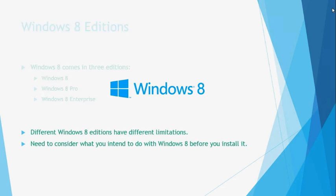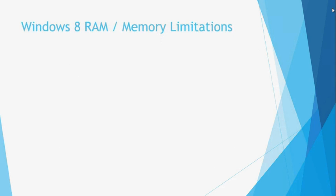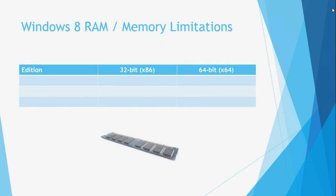The first big difference between the different editions of Windows 8 is the maximum RAM memory limitations of each edition. This is influenced by two factors: which architecture of Windows 8 you are using — that is, whether it is a 32-bit or a 64-bit architecture — and which edition of Windows 8 you are running. If you are using the Windows 8 edition in a 32-bit architecture environment, this has a maximum memory limitation of 4 gigabytes. In a 64-bit environment, this is increased to a maximum of 128 gigabytes.